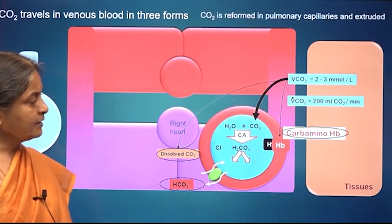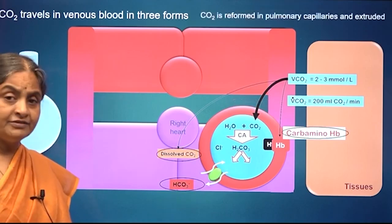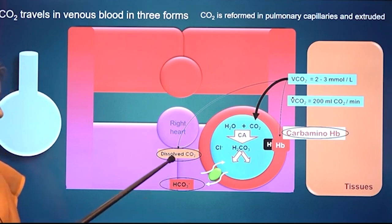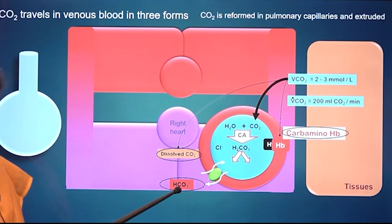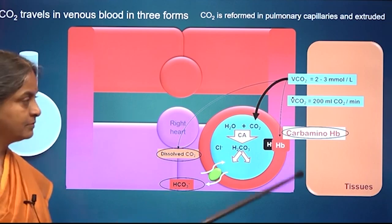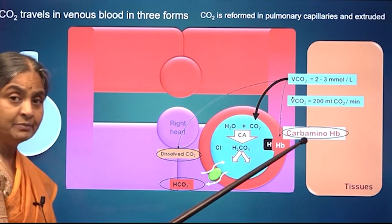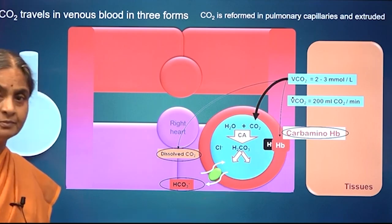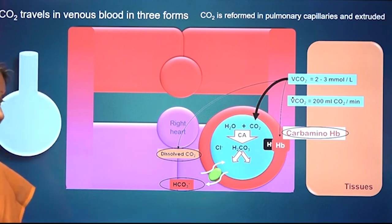To summarize, there are three forms of carbon dioxide in venous blood: dissolved carbon dioxide; carbon dioxide existing as bicarbonate, which is the major fraction; and carbaminohemoglobin in combination with hemoglobin.